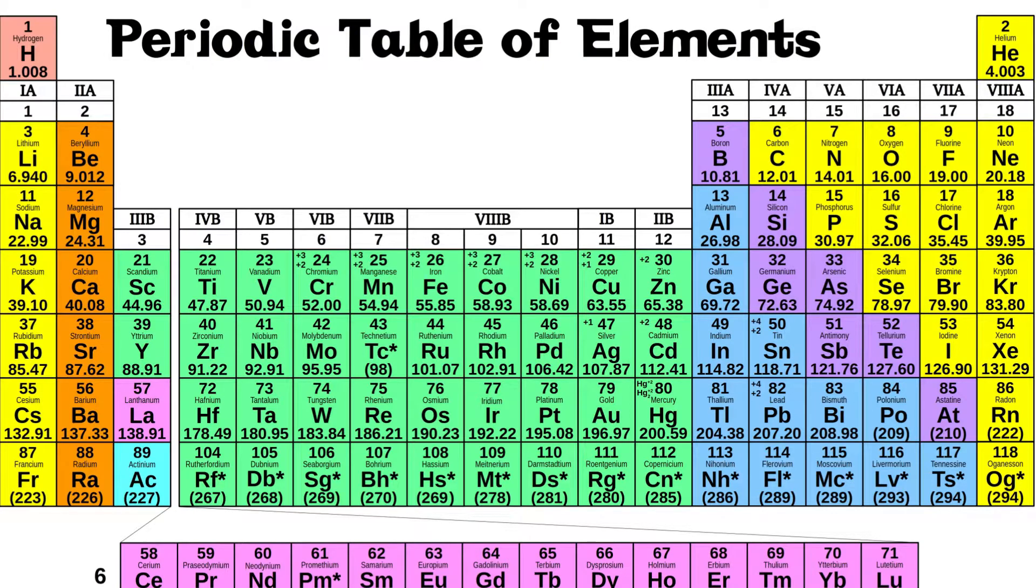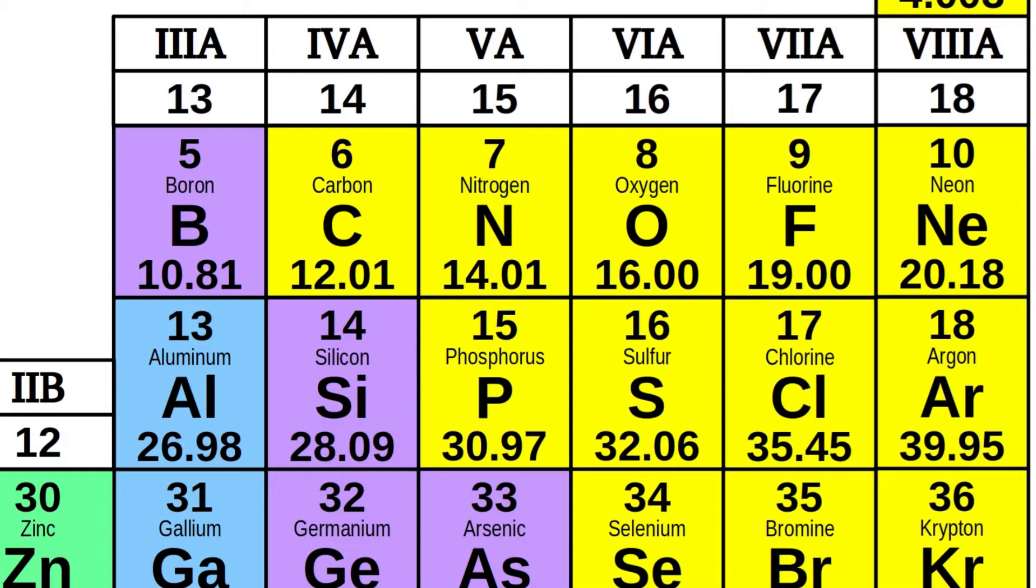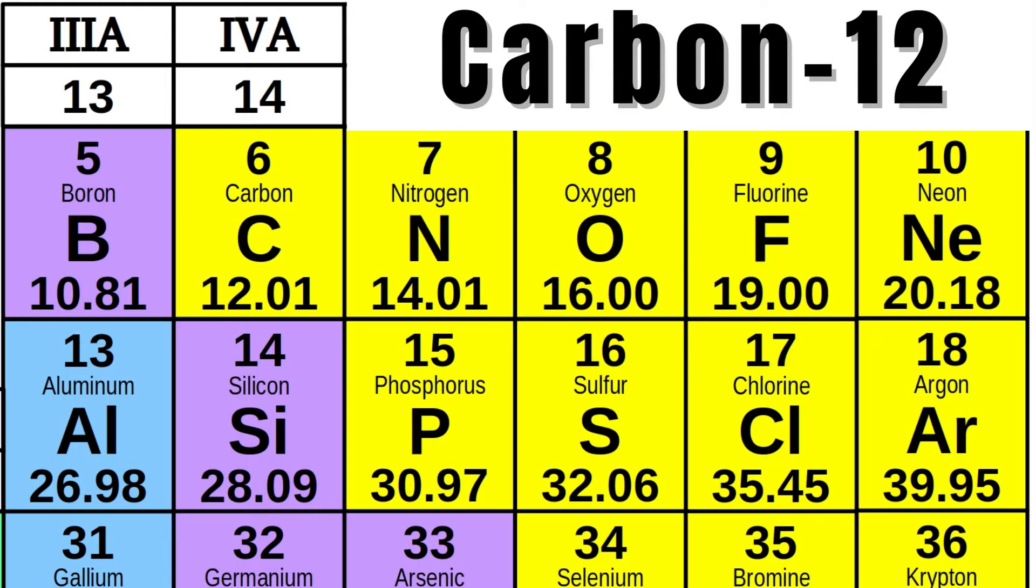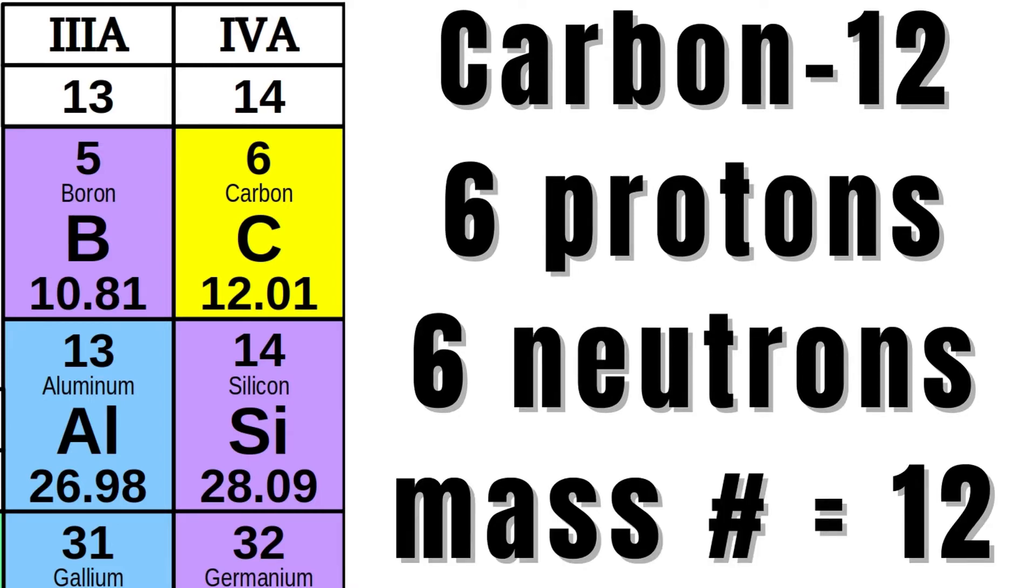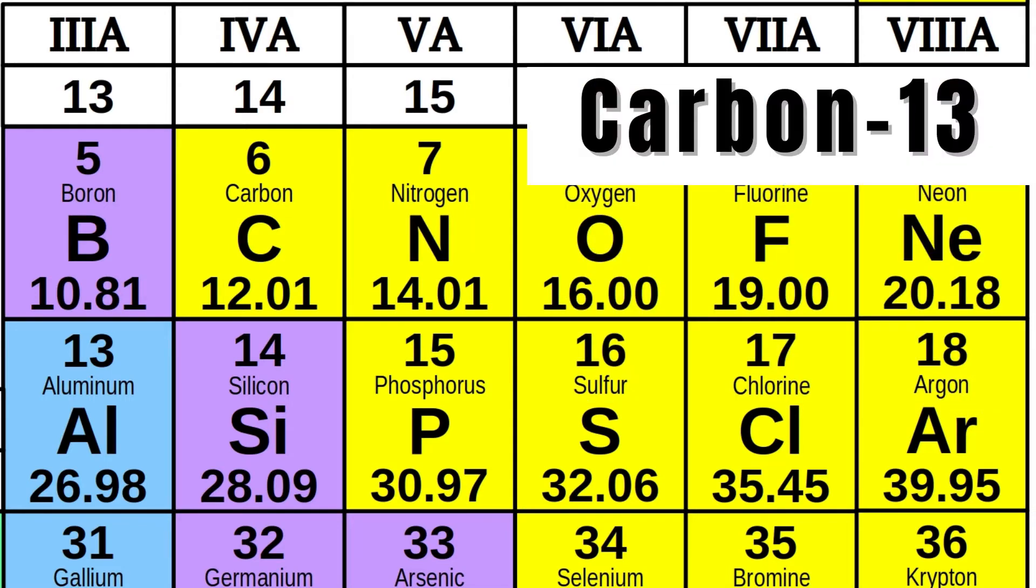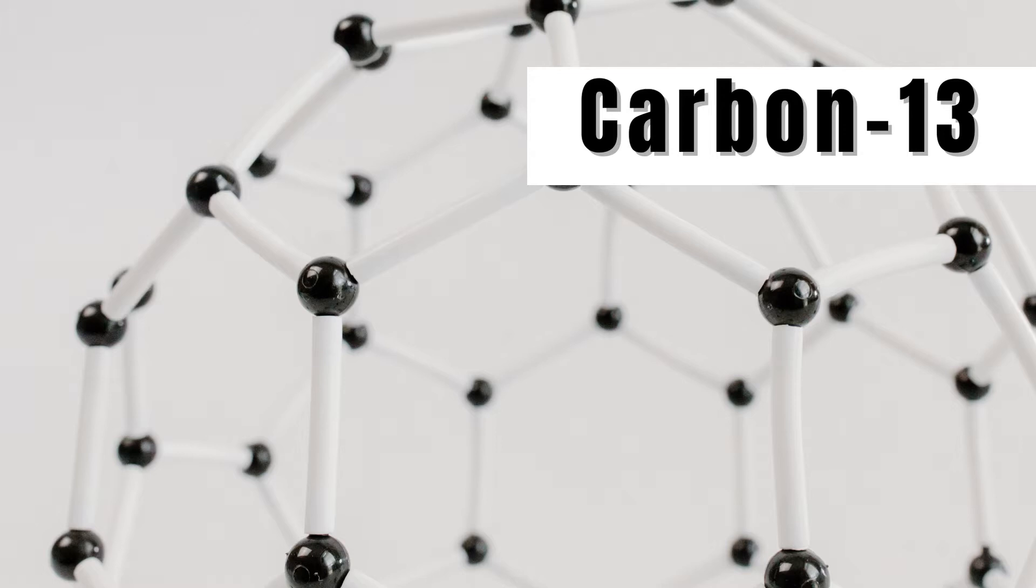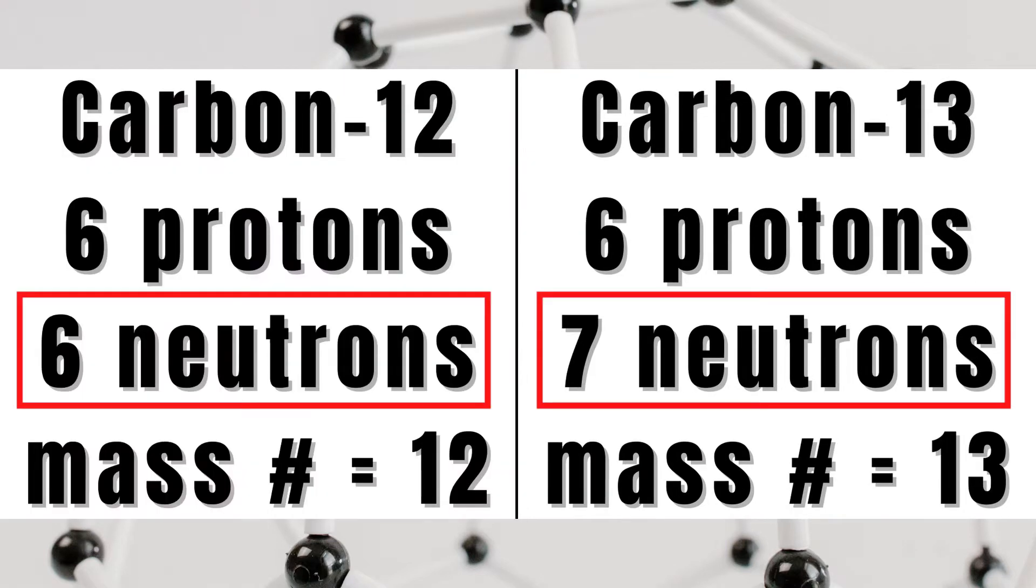Isotopes are common for almost all the elements. For carbon, 99% of the carbon atoms on Earth are carbon-12, that is, carbon atoms with six protons and six neutrons, making up a mass number of 12. And while there are trace amounts of carbon-11 and carbon-14, the vast majority of the other one percent of carbon on Earth is carbon-13. That is carbon atoms with six protons and seven neutrons, making up a mass number of 13. It has a different number of neutrons than the dominant carbon-12.